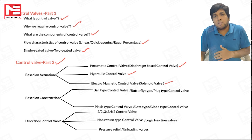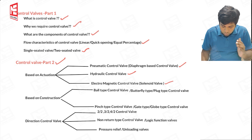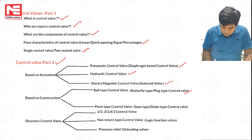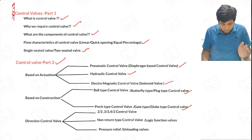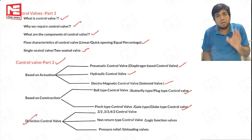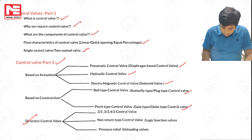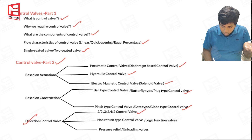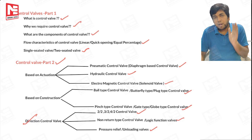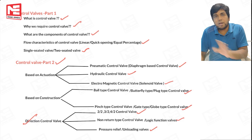When it comes to type of construction — based on the design of the plug — valves are further divided into types. The most famous are ball type, butterfly type, and flag type control valves. Apart from those we have pinch type, gate type, and globe type control valves. We'll also discuss directional control valves including 2/2, 3/2, 4/2 control valves, non-return type, logic function valves, and pressure relief valves.